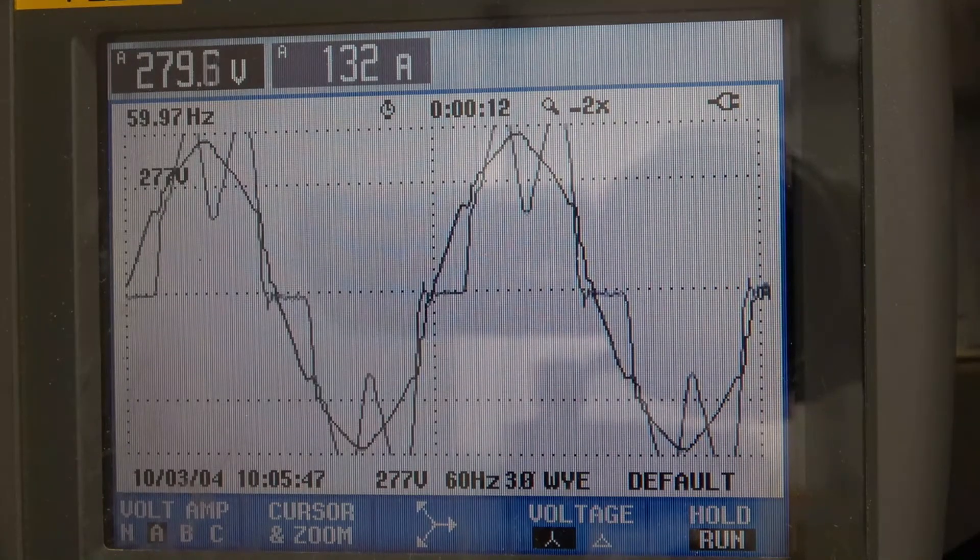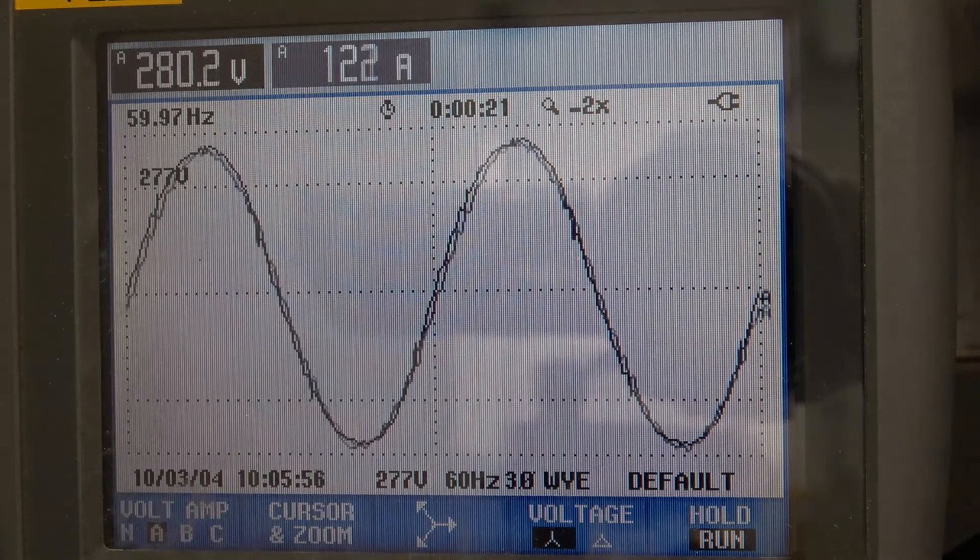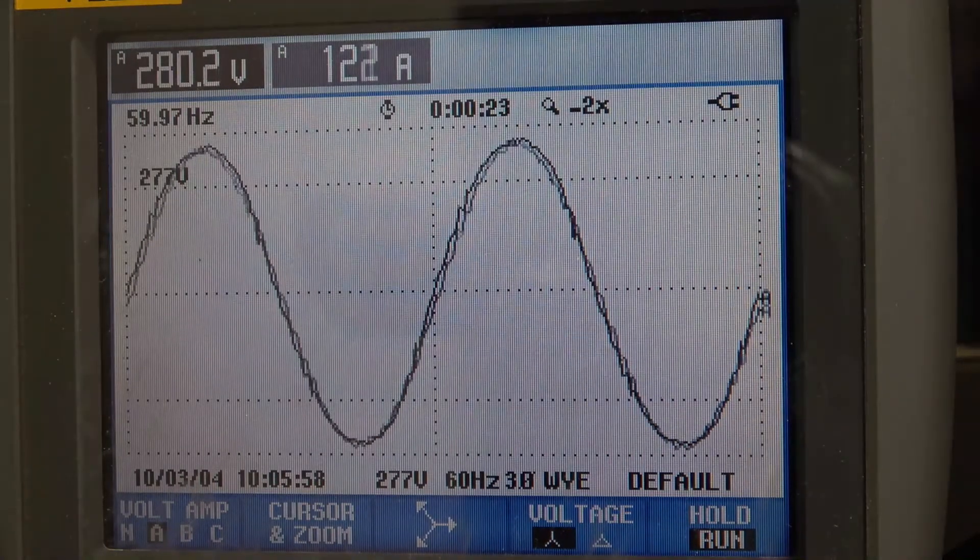Now what the active harmonic filter will do is inject equal and opposite harmonics to cancel out what's there. And if we take a look at the waveform now, it's nice and clean and also again in phase.